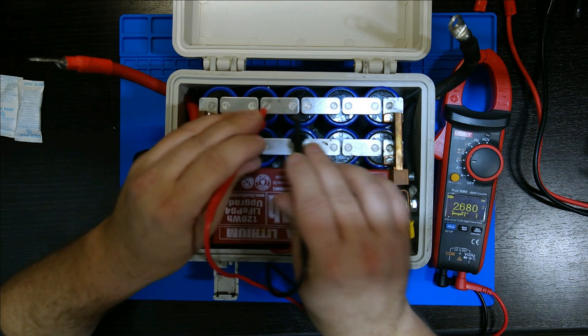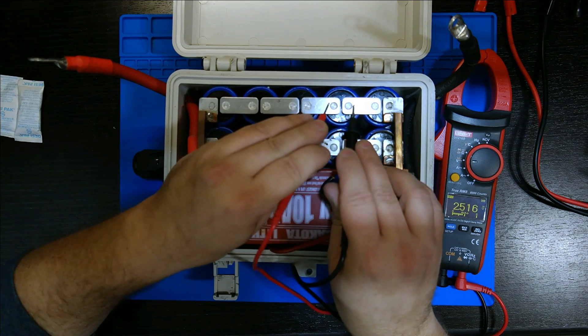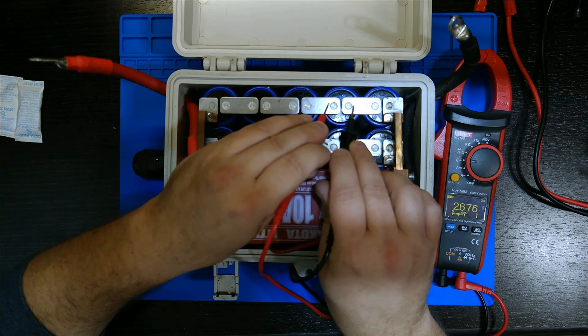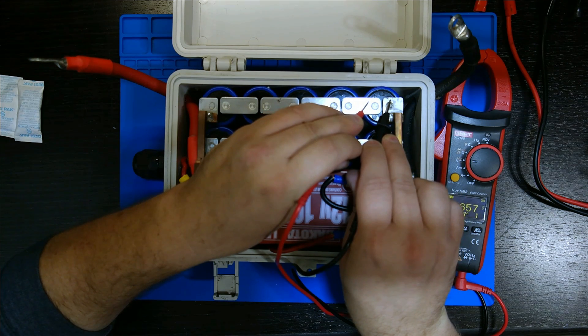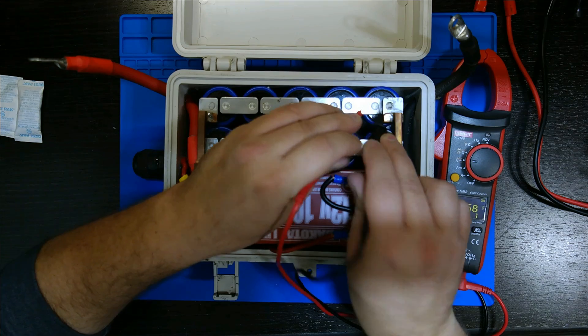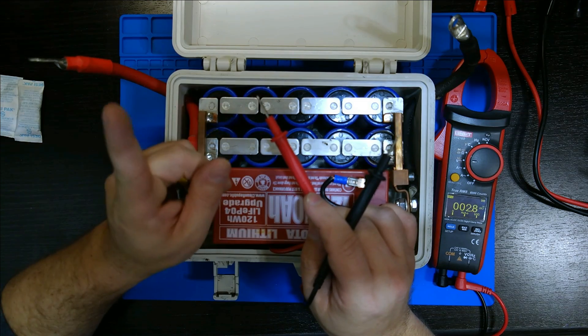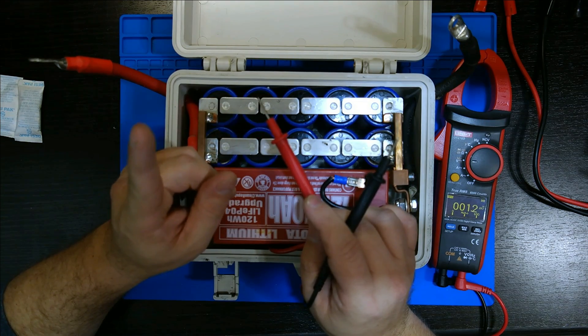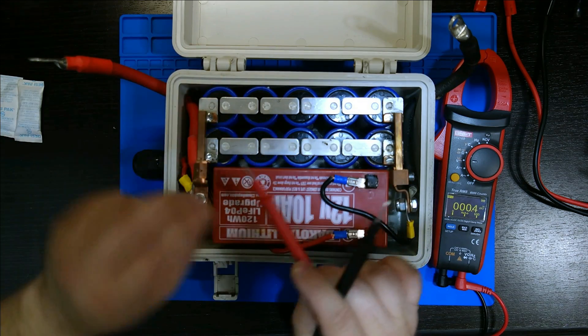2.68, 2.67, and 2.65. That is like absolutely no variance. Don't mind the people you hear upstairs, it is Christmas Eve. Let's test the second string. 2.64, 2.65, 2.67, 2.67, 2.67, and 2.68.